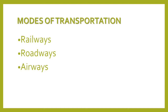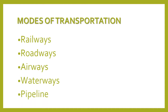Airways — which vehicles come in airways? Aeroplanes, helicopters, air balloons, and all of these vehicles come into air travel. Then there are waterways, and then there are pipelines. We are going to be evaluating these five modes of transportation, learning about their advantages and disadvantages.